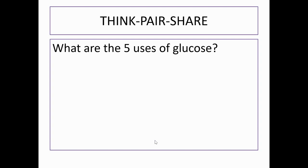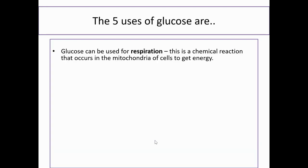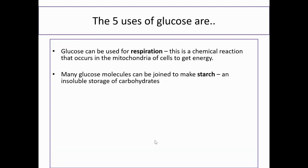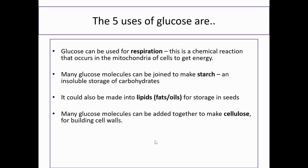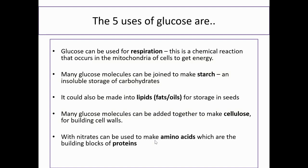Hopefully you've just had a good conversation about plants and the uses of glucose. The five uses are: respiration, starch, lipids, cellulose, and amino acids for proteins. You do need to remember these — it might be a case of rote learning: write them out lots of times and test yourself.